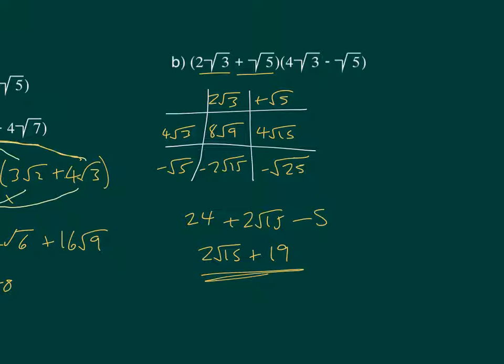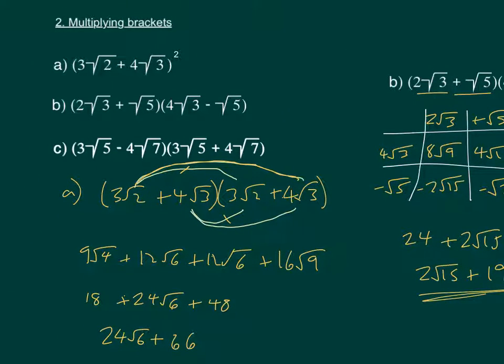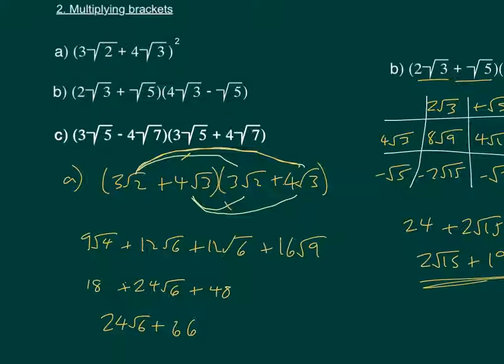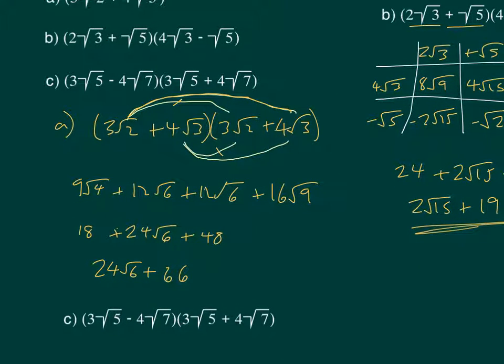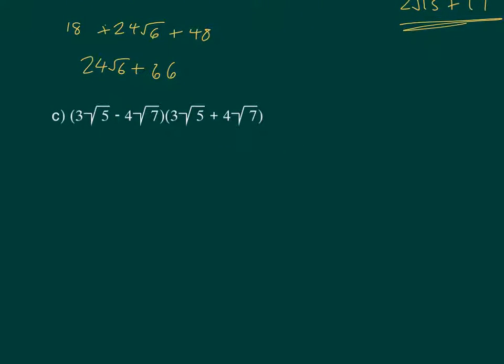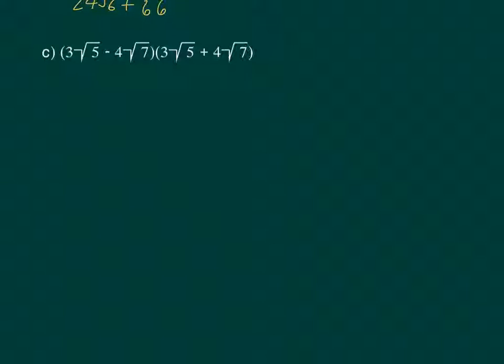OK, so let's now go on to the final question. And if I take this one down here, we can have a look at how it looks. Now this type is going to be quite important for when we are rationalising the denominator in the next video. As you can see, both brackets are almost the same. The only difference is this one's positive and this one's got a negative sign in it. And we'll see what happens when we expand this one. So for this one, I'm going to do the grid method again.